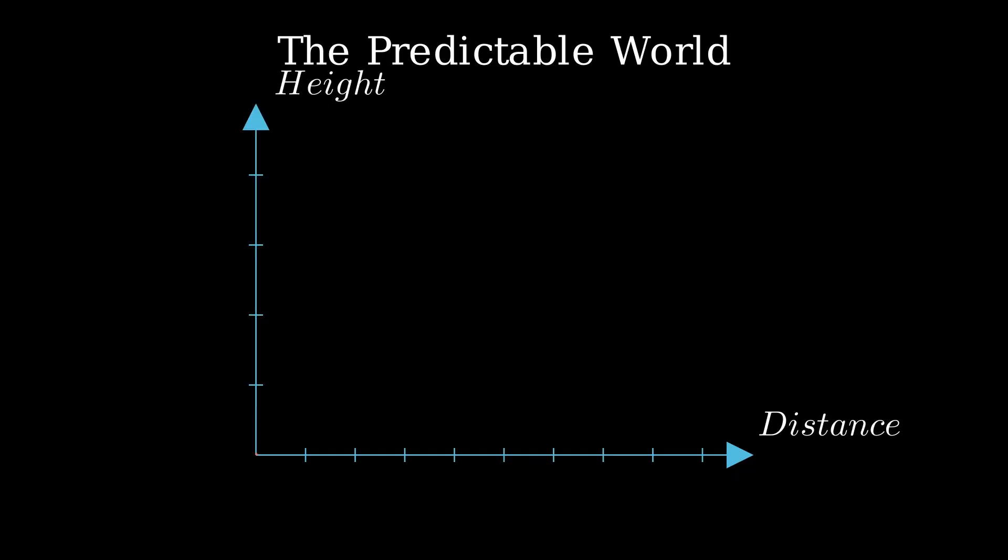Imagine a world where everything is predictable. If I drop a ball, it falls in a perfect arc, landing exactly where physics says it should.